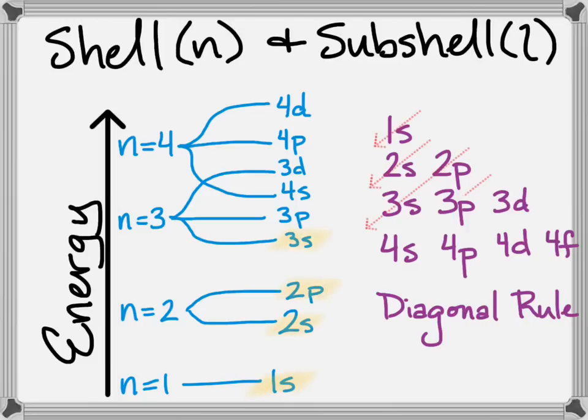...you place them in this orientation, then you can use the diagonal rule. Here you can see that if you fill in these diagonal order, you're going to fill from bottom up. 1s, then 2s, then 2p, then 3s, then 3p, then 4s, then 3d, then 4p. So you have to line it up correctly. You need to draw the arrows going from top right to bottom left, but if you follow those arrows, you're going to get the order in which the subshells fill.